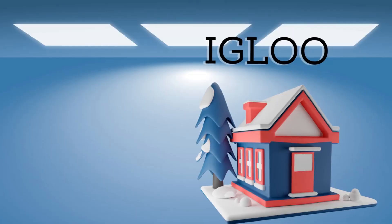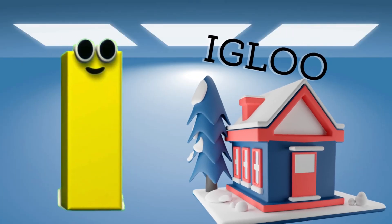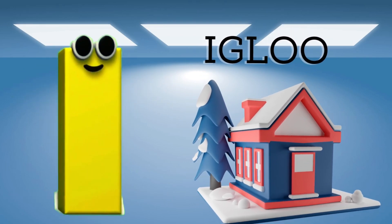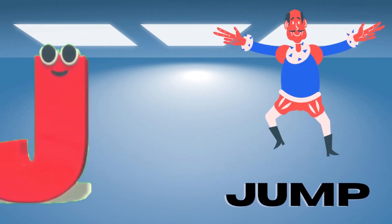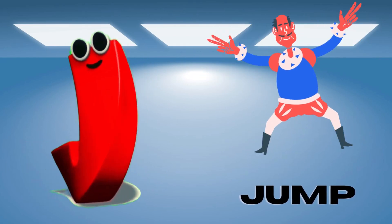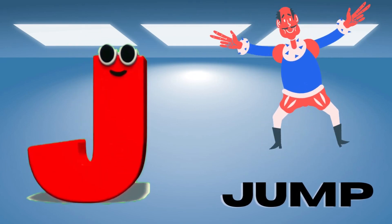I is for igloo, i-i-igloo. J is for jump, j-j-jump.